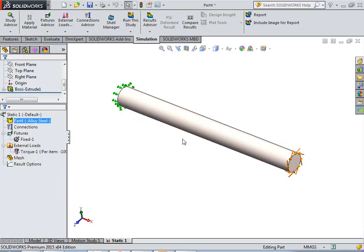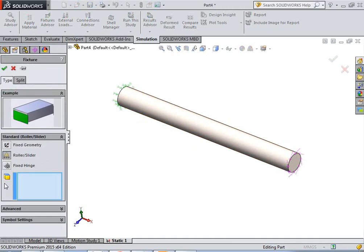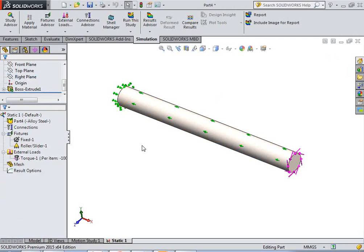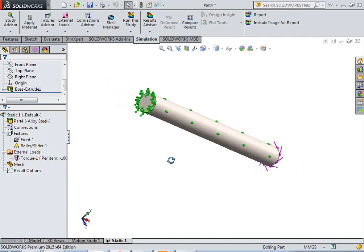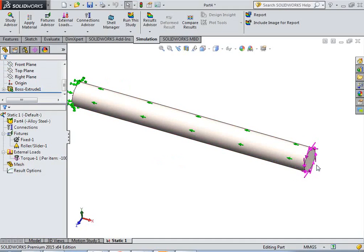And another part is click on the fixture, select the roller and slider, select this surface. So, we have applied all boundary conditions on our problem. Again, this end is the fixed end. We have applied the torque on this face, torque of 10000 Newton-meter, and this face, we applied the roller and slider support on this face.